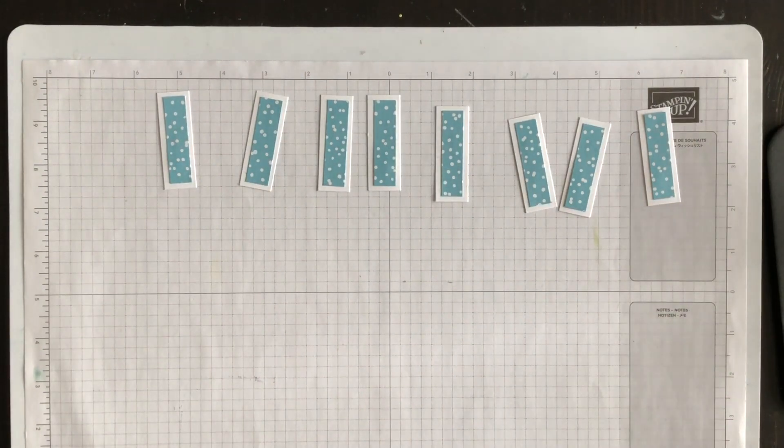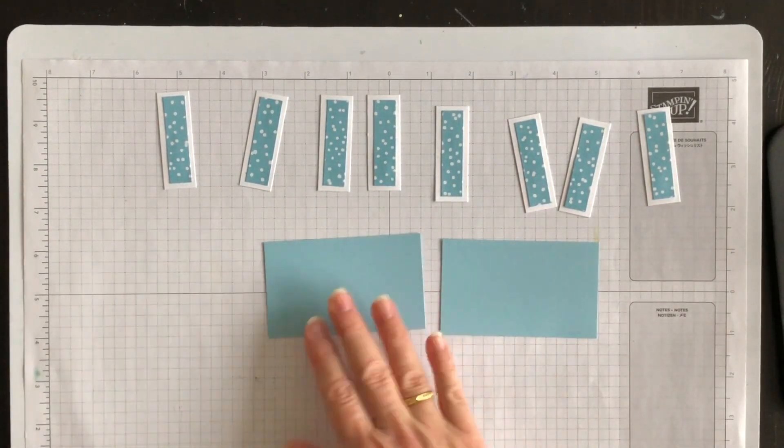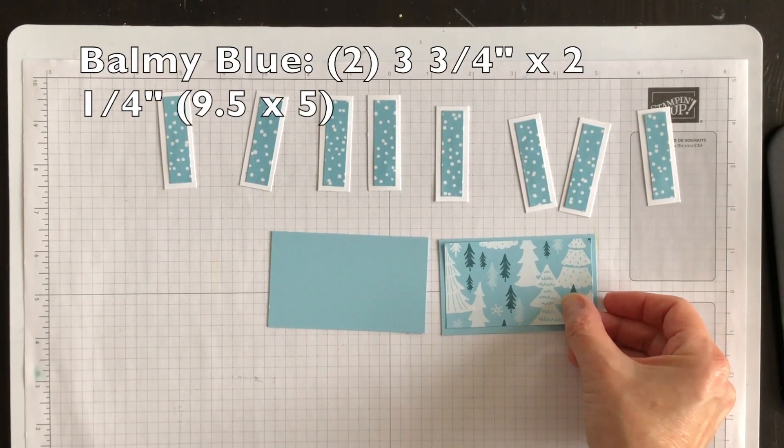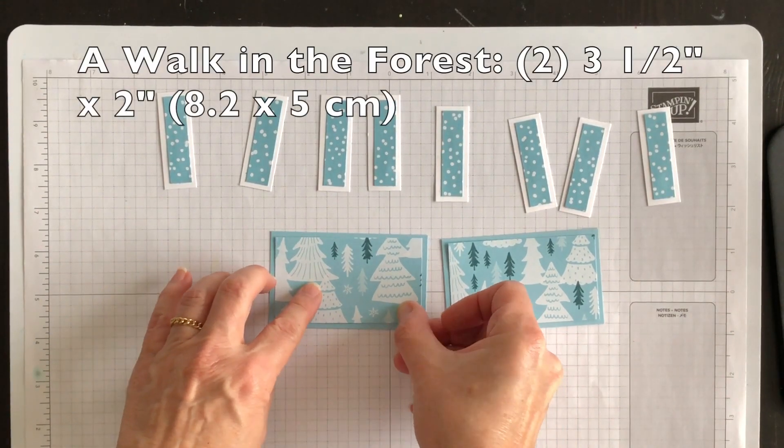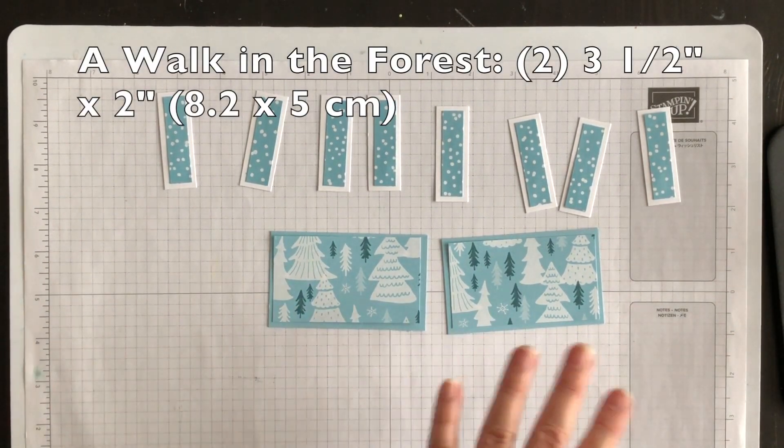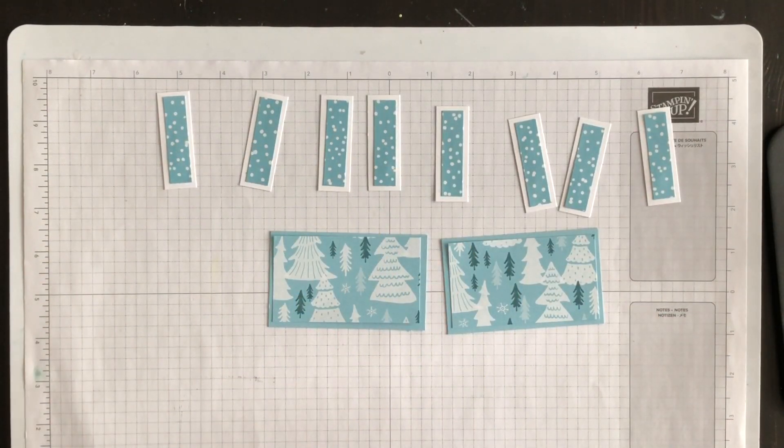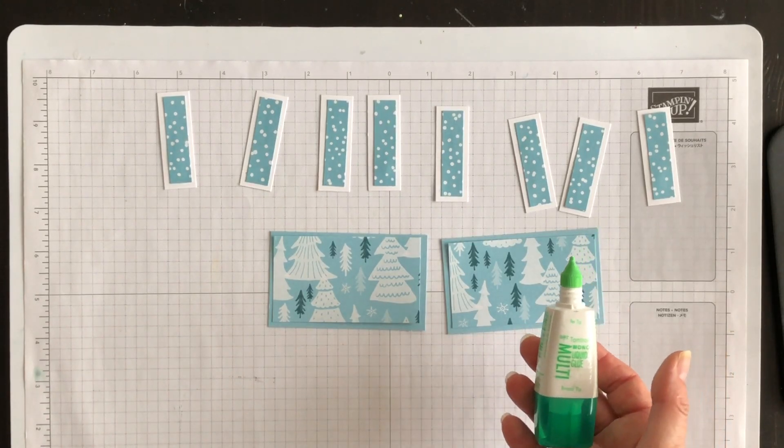I'll do that using my multi-purpose liquid glue. Now, those need to dry a little bit and while they're doing that, I've got two pieces of balmy blue cardstock and I have another design in the A Walk in the Forest Designer Series paper and I'm going to adhere these together. All of these pieces will be adhered to the panels of the fun fold in a few minutes, so I'll adhere those and I'll be back.